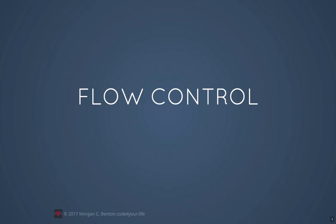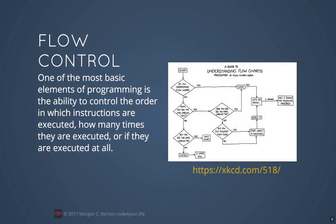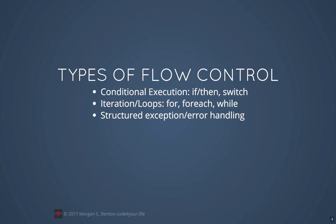Welcome, this is a short video on flow control and computer programming. One of the most basic elements of programming is the ability to control the order in which instructions are executed, how many times they're executed, or even if they are executed at all. There are several different types of flow control that are commonly used: conditional execution, also known as if-then statements; iteration, also known as loops; and structured exception or error handling, which we'll cover in a separate video.